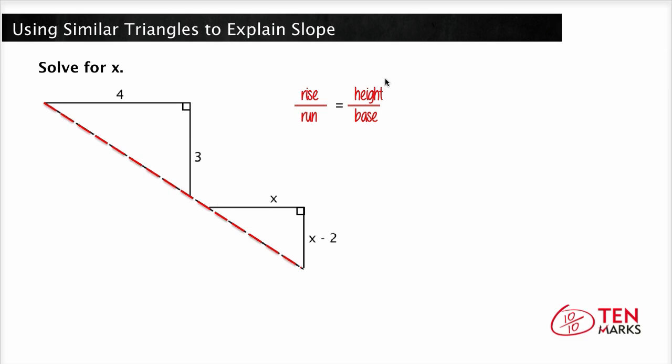Now the ratio of the height to base of the first triangle is given. It's 3 to 4. Now the ratio of the height to base of the second triangle, however, has variables in it. So here it's x minus 2 to x. But since these triangles are similar, the ratios must also be equal. So we can set up that relationship right here.